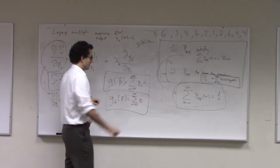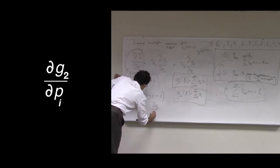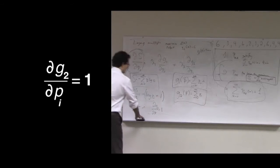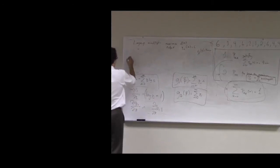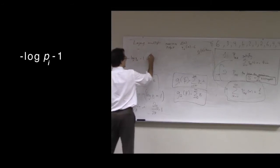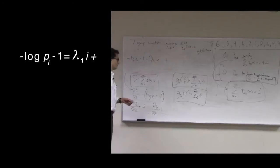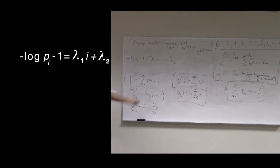Now we take the derivative of g1 with respect to pi. Taking the derivative of that sum with respect to pi, we find that dg1/dpi equals i. And finally, dg2/dpi equals 1 — there's only one term in the sum that doesn't get destroyed by the derivative. Putting this all together: negative log pi minus 1 equals lambda 1 times i plus lambda 2. This is our equation that is satisfied when you maximize the entropy subject to these constraints.